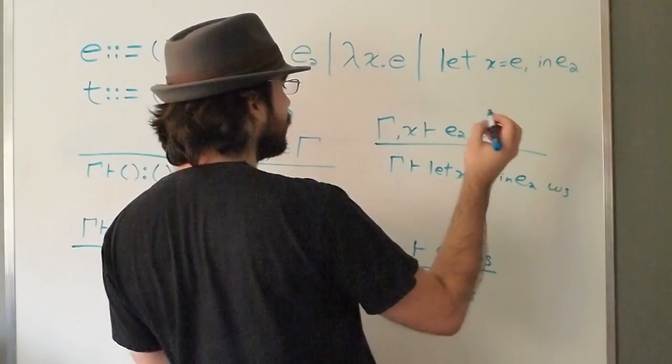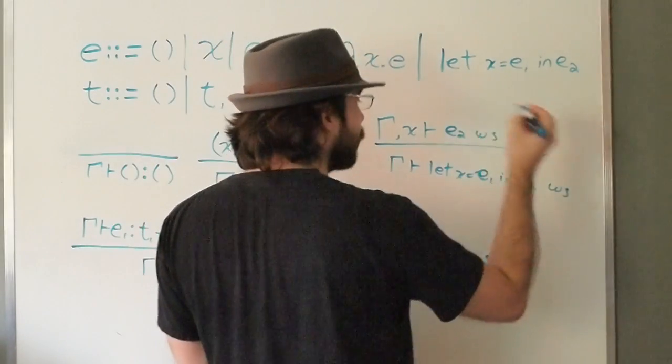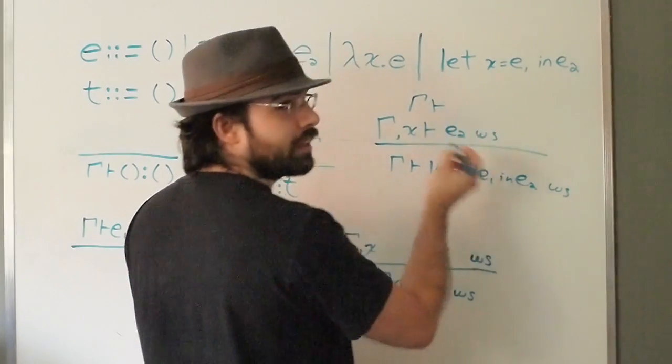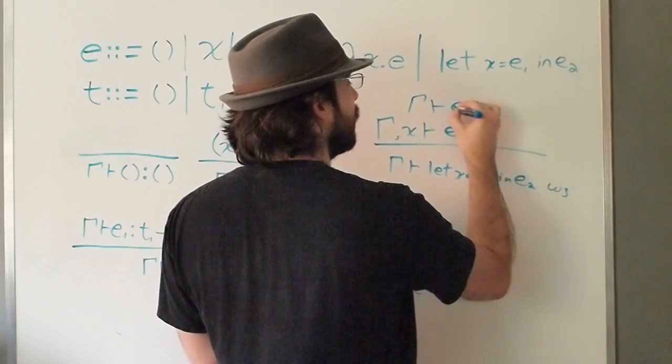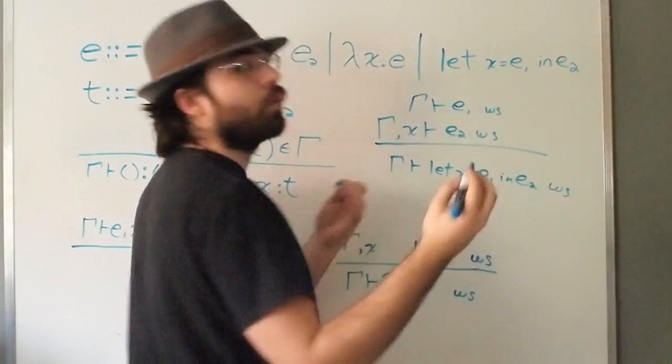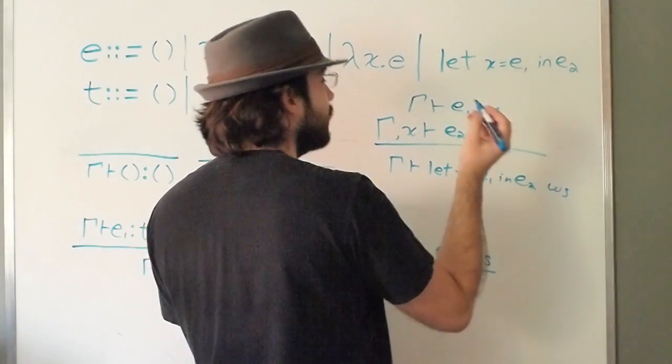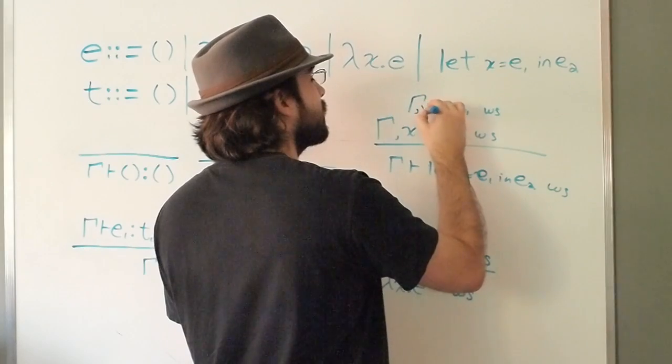The other condition would be either that in the non-augmented context gamma, e1 is well scoped, or if we wanted to have the language let that is recursive, then we would say in the context augmented by x that e1 is well scoped.